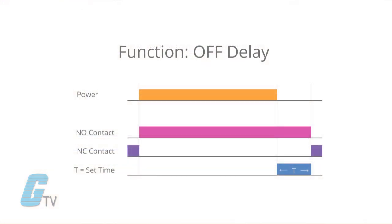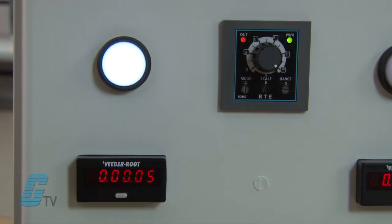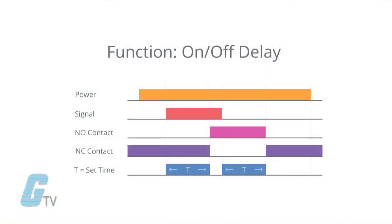Off delay timers begin timing when power is removed or when triggered by a signal. The contacts will change from an on state to an off state after the time has elapsed. This should not be confused with an on off delay timer, which can be used with signal start timers.